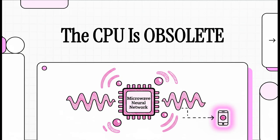Alright, let's just jump right in. The CPU is obsolete. I mean, wow, that is a huge claim, right? But what if I told you that for some of the biggest problems we're trying to solve, the chip that's powered everything for the last 50 years is about to get left in the dust.